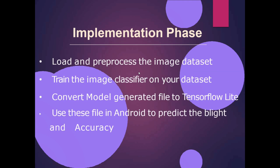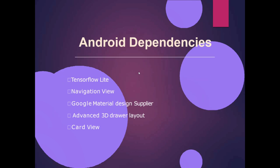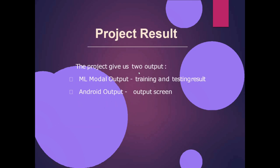Implementation phase: load and pre-process the image dataset, train the image classifier on the dataset, convert the model and generate a file to TensorFlow Lite. Android dependencies include: TensorFlow Lite, navigation view, Google Material Design, advanced 3D drawer, and card view.